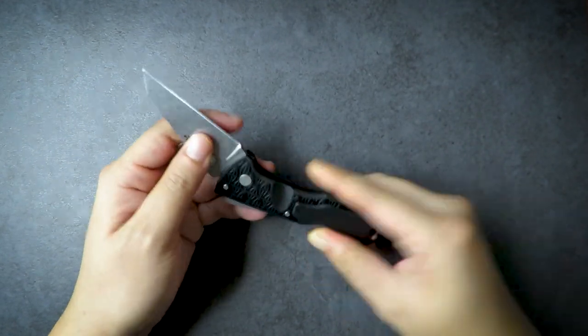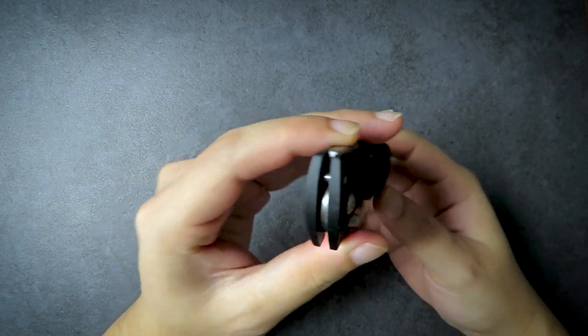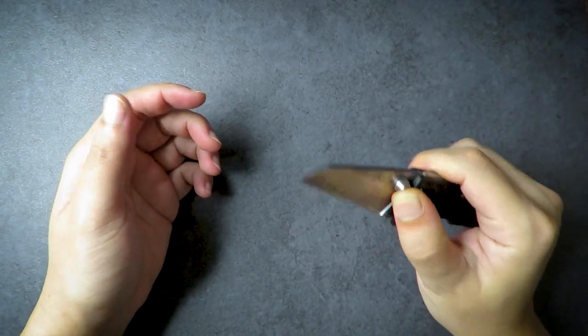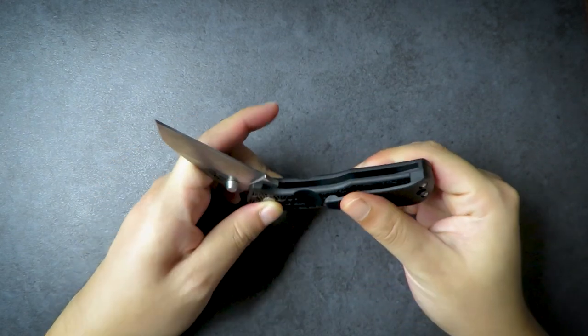It is running on phosphor bronze washers, which is fantastic. Love their phosphor bronze washers. As a result, this knife is pretty smooth, and I really like the smoothness of the knife right here. I've not taken it apart. I reckon if I take it apart, put some lube in there, oh my god, this is going to be so smooth.